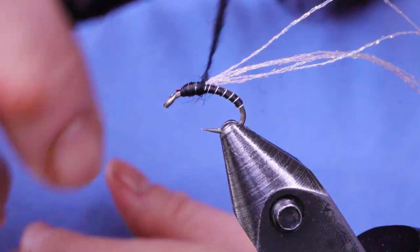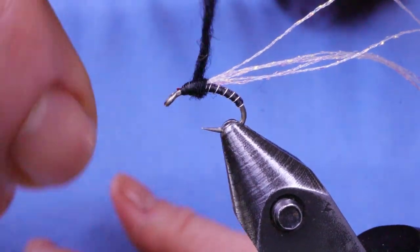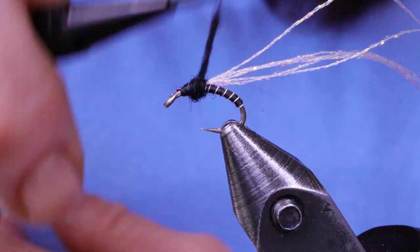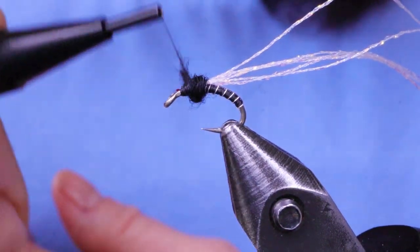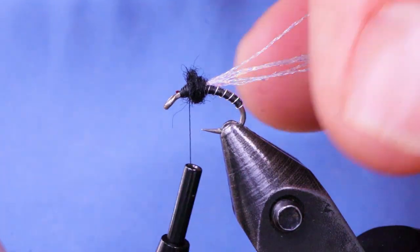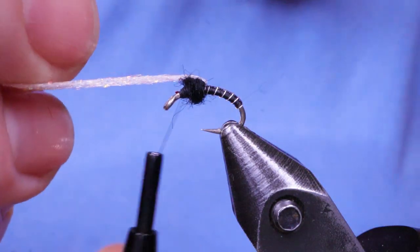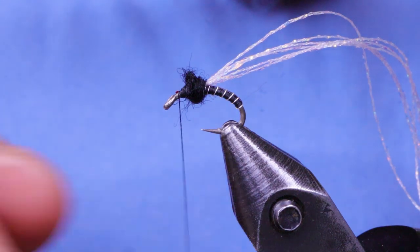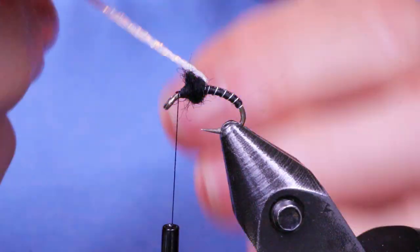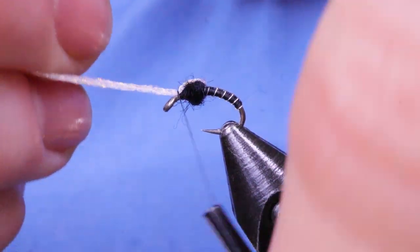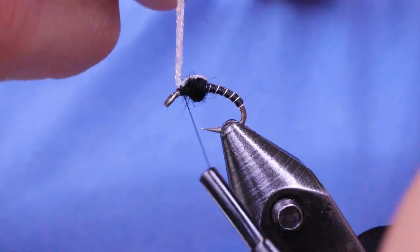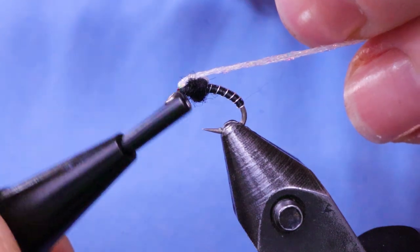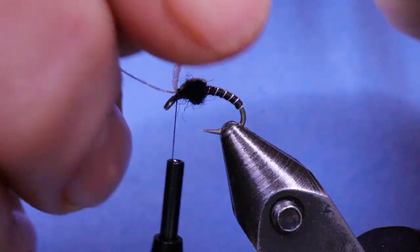I don't want a large thorax. If it gets loose you can just pull it down and give it another twist with your fingers. I'm staying well back from the head. Next just give my thread a little bit more wax. And next just bring your wing case over top of the thorax and tie it off with your thread.